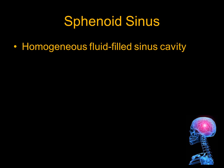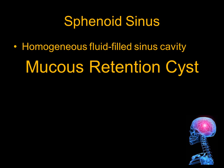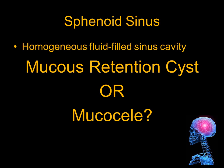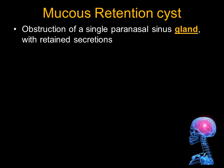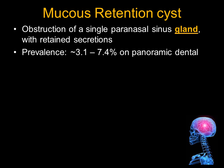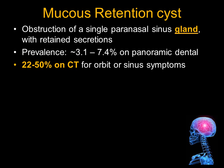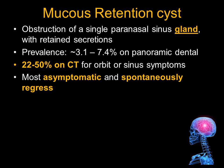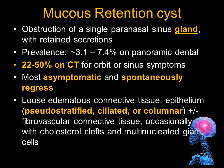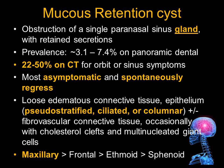This lesion is a homogeneous, fluid-filled sinus cavity. Is this a mucous retention cyst, or is it a mucocele? This is a very common, confusing question. A mucous retention cyst is obstruction of a single paranasal sinus gland with retained secretions. The prevalence is a little bit less than 10% on panoramic dental films, but up to 50% on CT scans done for orbit or sinus symptoms. Most mucous retention cysts are asymptomatic and spontaneously regress. They are typically lined by respiratory epithelium, which may become modified. They are most common in the maxillary sinus and least common in the sphenoid sinus.